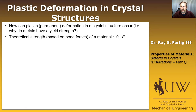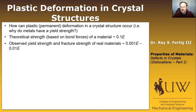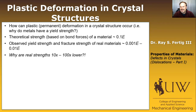Steel has a modulus of roughly 200 GPa, which would suggest that the theoretical strength of steel should be about 20 GPa. Steel's strength is nowhere near 20 GPa — if you can get to 2 GPa, you're doing pretty well. So we're talking an order of magnitude less than what we'd expect. In fact, all materials are like this. The observed yield strength and fracture strength in real materials are between 0.001 and 0.01 times the elastic modulus — 10 to 100 times lower than predicted theoretically from bond strength alone.